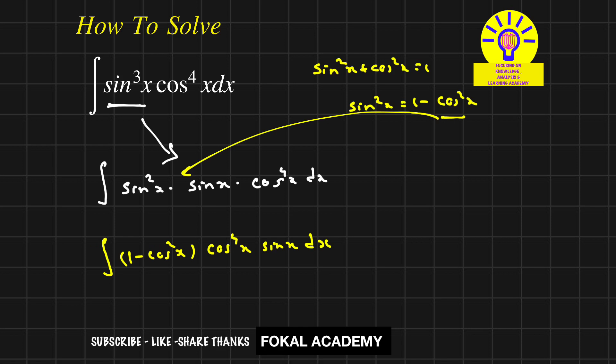Now substitute cosx = t. Differentiate on both sides, so derivative of cosx means -sinx dx = dt. Bring minus on the right hand side, so sinx dx can be written as -dt.